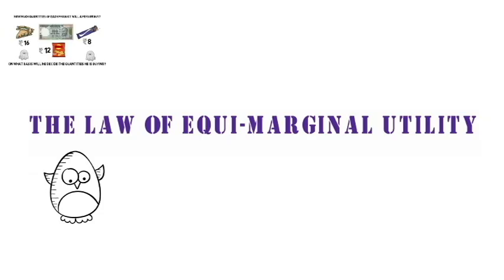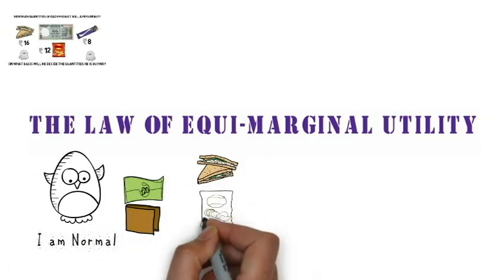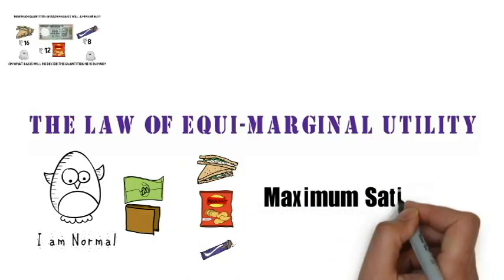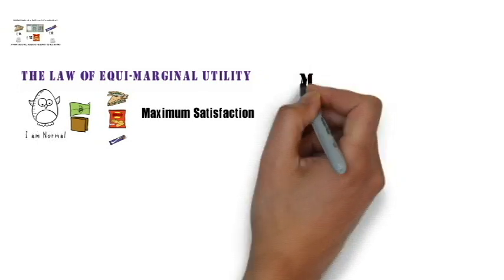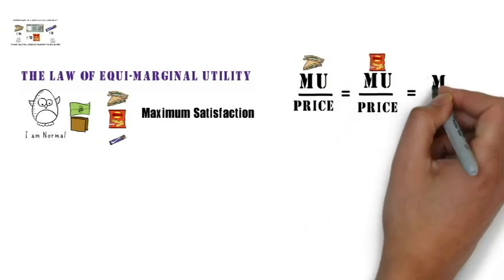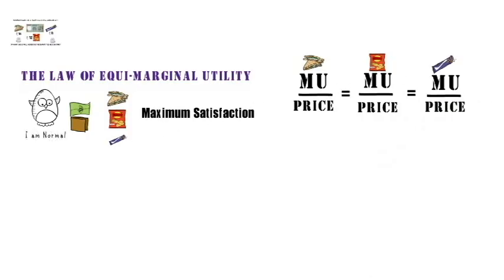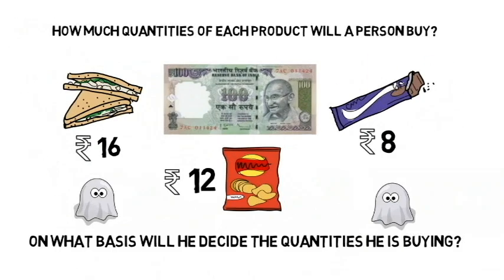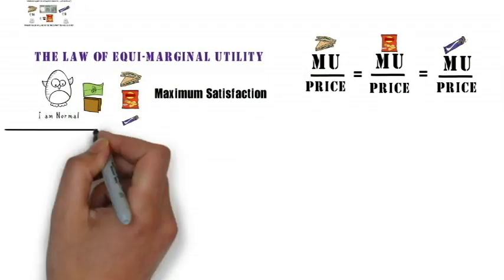Assuming that your friend is normal, he'll try to spend his income on all three commodities in such a way that he attains maximum satisfaction, and the way he'll do it is by applying this formula — that is, by equating the ratio of marginal utility to price of all three commodities. Just remember that your friend has to spend Rs.100 on all three commodities to attain maximum satisfaction.